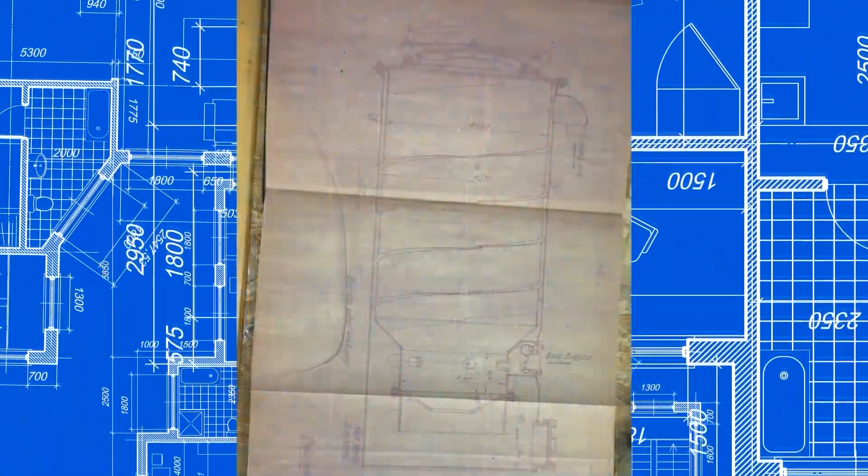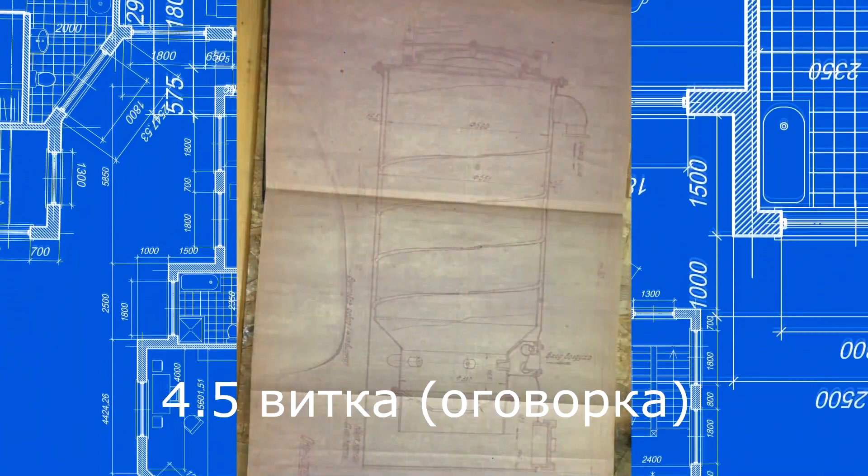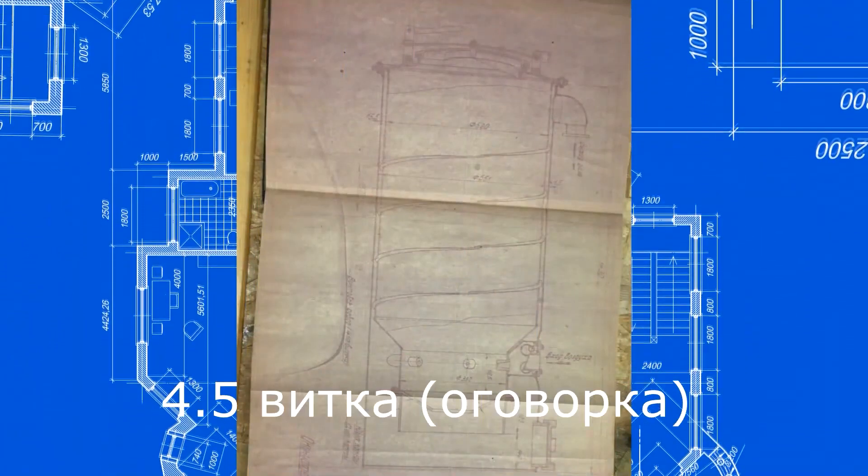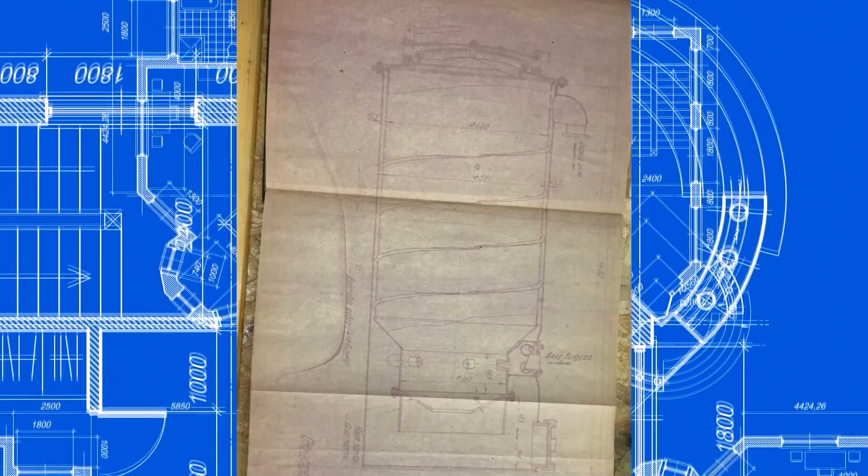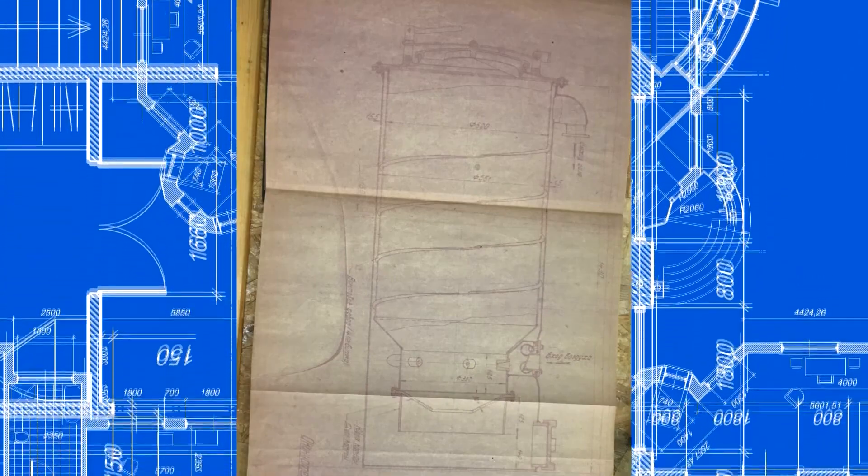The scientists used 4.5-turn coils which lengthened the gas travel. This increased the efficiency by another 2.5% and also cooled the gas, allowing to reduce the number of coolers.